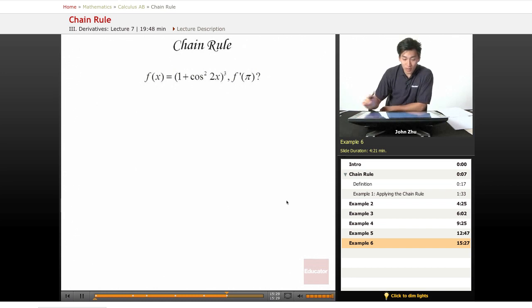Looking at one final example, f(x) equals (1 + cos²(2x))^(1/3). Right away we see that there's a squared cosine term. Let's go ahead and try to find out what that is.